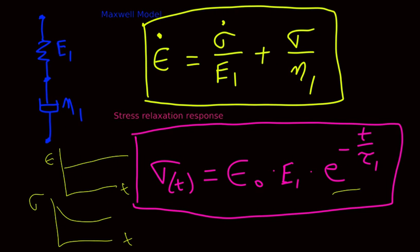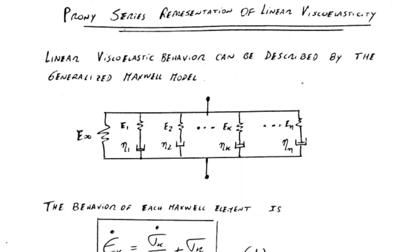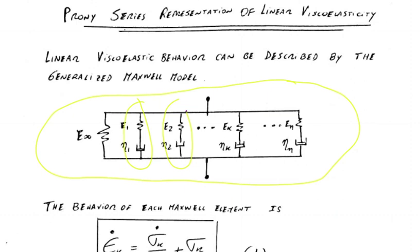Now let's understand the Prony series representation of linear viscoelasticity. This model shown here is called a generalized Maxwell model. As you can see, you have many single Maxwell models: E₁, η₁; E₂, η₂; ... Eₖ, ηₖ. You also have one spring at the beginning whose stiffness is E∞. One could argue this is also a Maxwell model with η = 0, leaving only a spring.